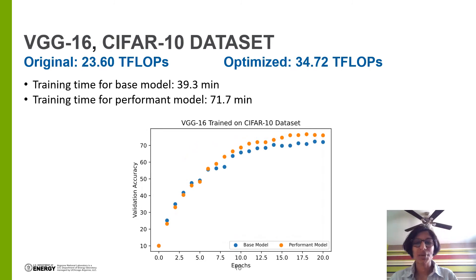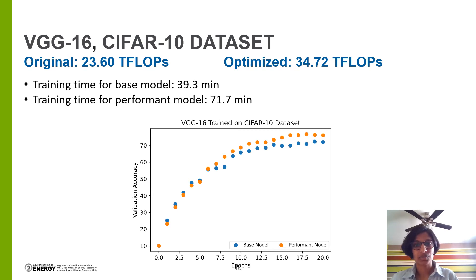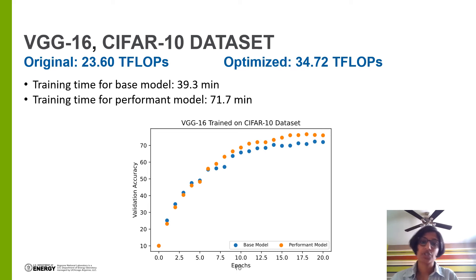Now we show the results of VGG16 trained on the CIFAR-10 dataset. We observe an increase of about 10 teraflops between the original and FLOPs-optimized models, which isn't as drastic as it was for AlexNet, but significant nonetheless. Additionally, the accuracies of both models closely follow one another, which is once again positive news.